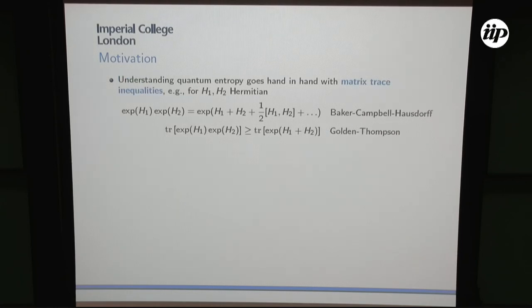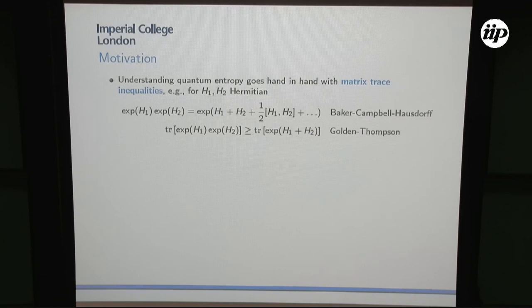If we really want to understand quantum entropy, what we have to understand are so-called matrix trace inequalities — this is really at the core of the problem. What are matrix trace inequalities? We all know how to calculate with numbers. But if we have matrices — say two Hermitian matrices H1, H2 — when they don't commute, there are many identities that no longer hold.